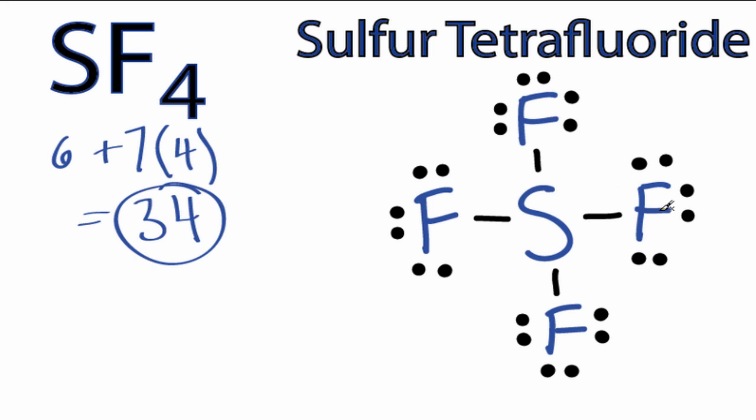We filled the octets for everything, and we have 2 valence electrons left over. But we can put those right here, because sulfur is in period 3, and it can have more than 8 valence electrons.